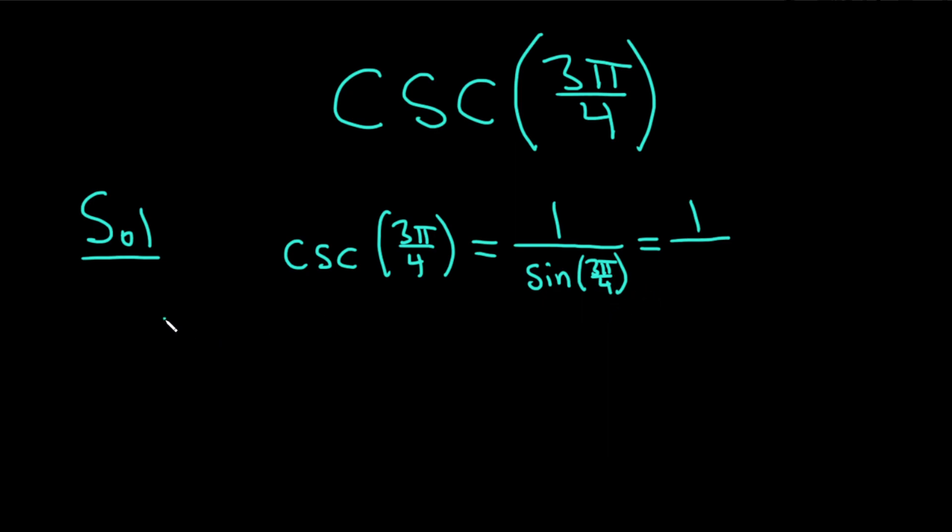If you know about the unit circle, you know that on the unit circle, every ordered pair has the form cosine θ, sine θ. And the unit circle, the angles that have the 4s in them, so like π over 4,